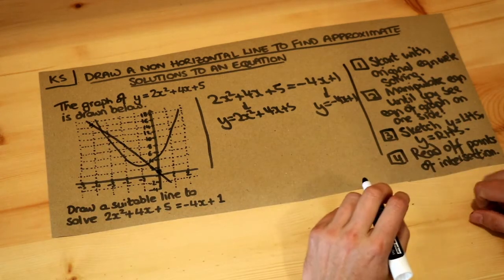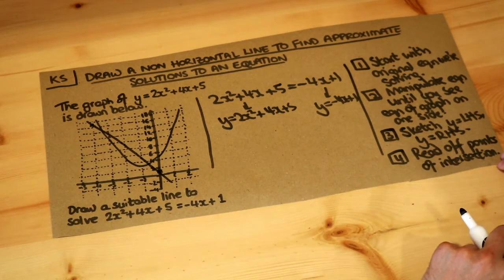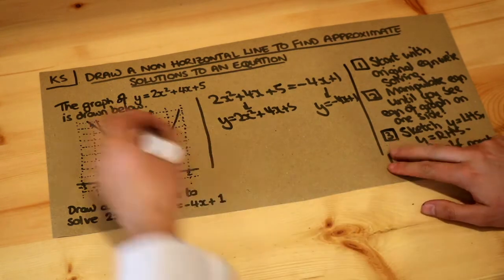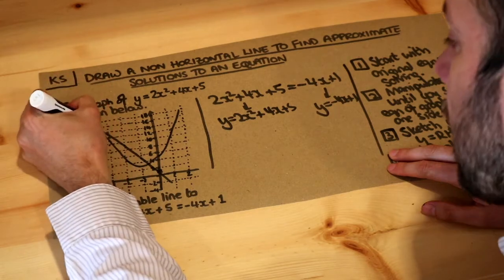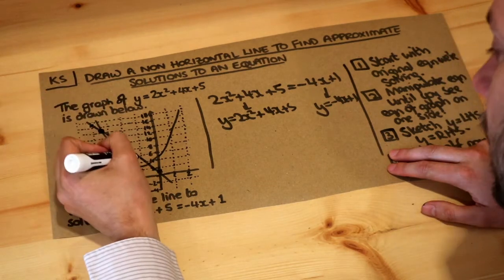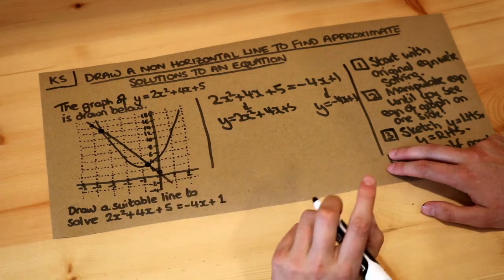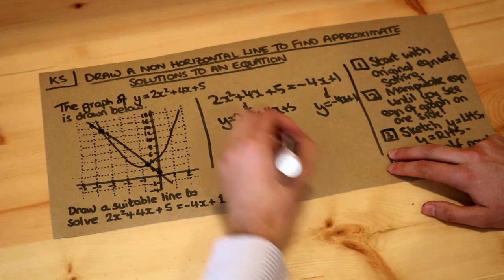So there's our line, and then the final step is to read off the points of intersection. Where do these two lines cross? We can see they cross here and about here. This is just going to be approximate, and usually we'd have a more accurate graph.